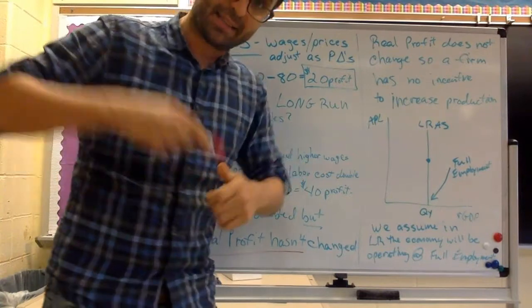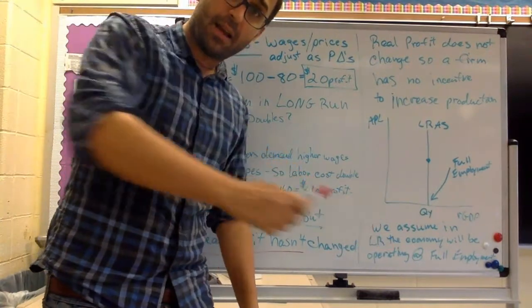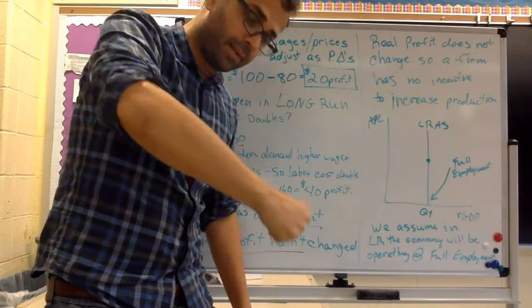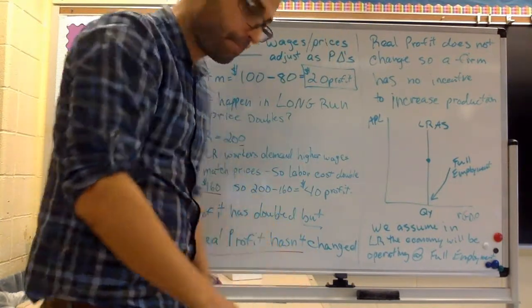And so that's our two points. You're going to see a graph that has an aggregate demand going down and a short run aggregate supply sloping upward. And then down the middle, usually at full employment, is the long run aggregate supply.